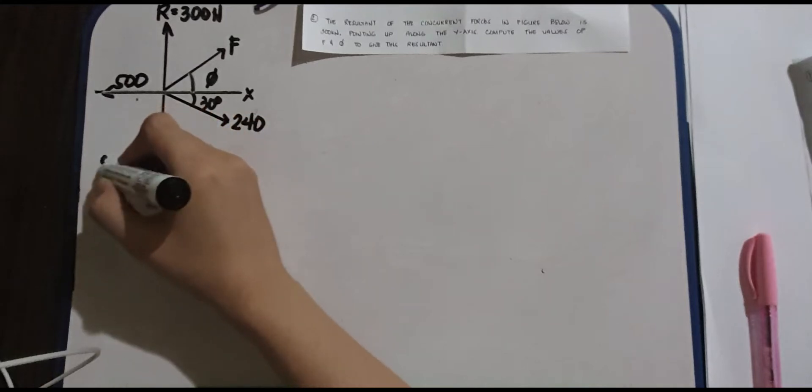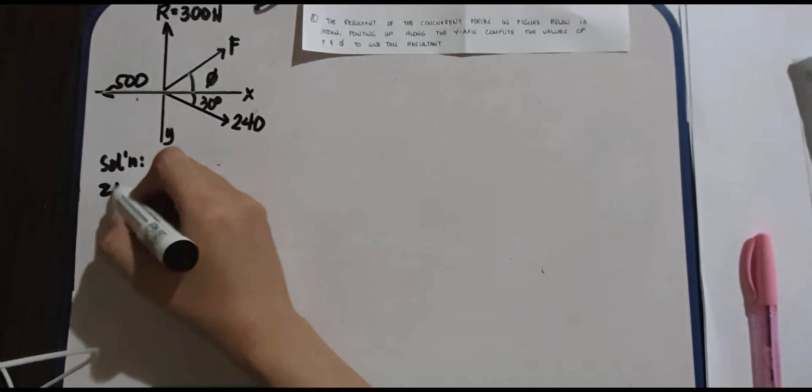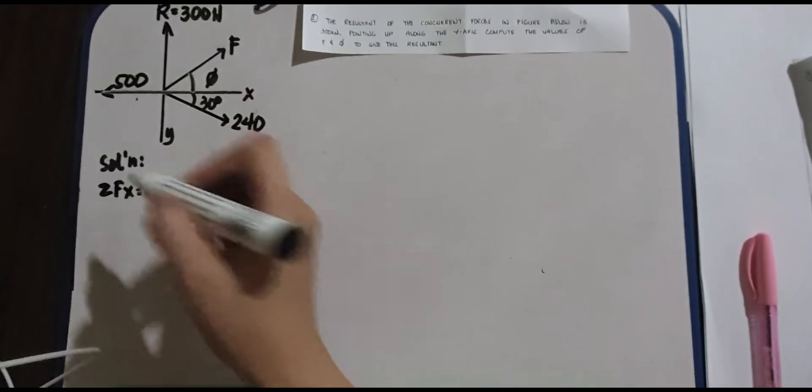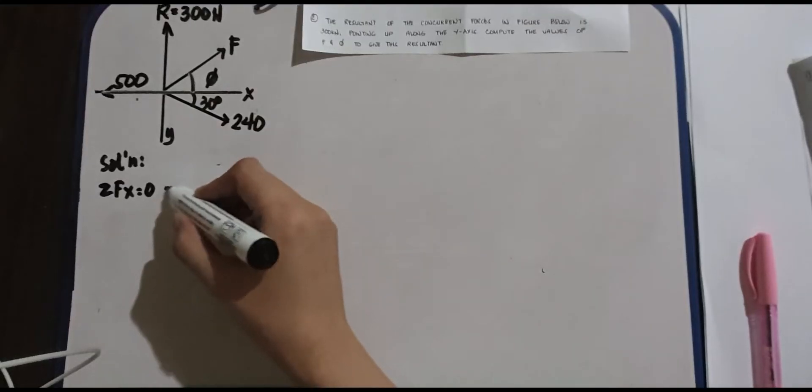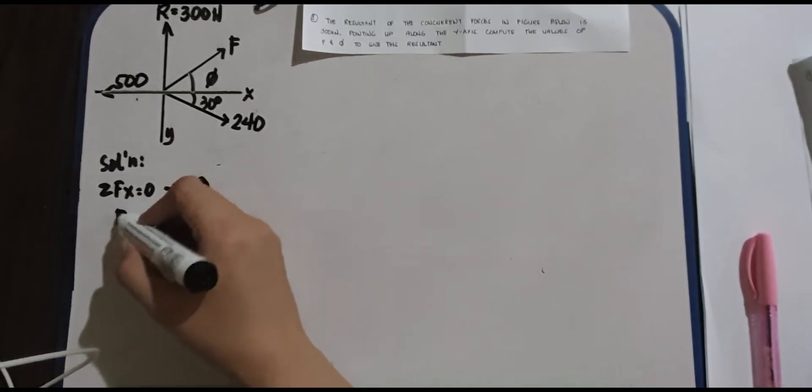This is our solution. So we have summation forces X equals 0. What are the X components? Everything going to the right side is positive. So we have F times cosine of phi.